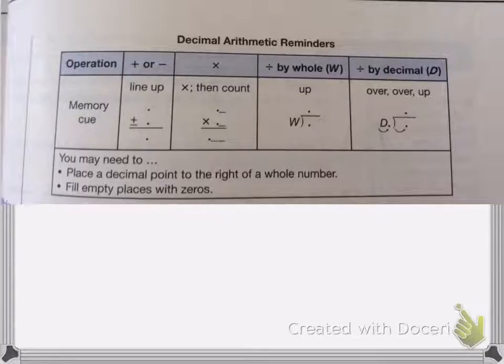For example, if I'm adding or subtracting, the cue is line up. You just line up the decimals. For multiplying, you multiply then count. So you multiply the number, then count how many decimal places there are.